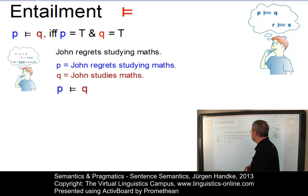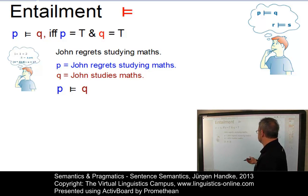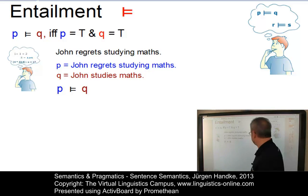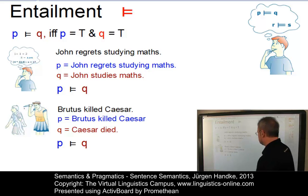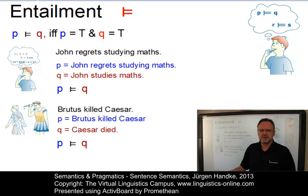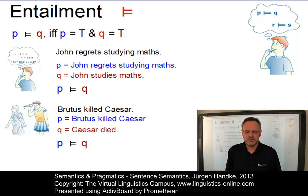Here are two examples. John regrets studying maths. Now, P is 'John regrets studying maths' and Q is, for example, 'John studies maths.' And clearly, P entails Q. Or take this one: Brutus killed Caesar. P is 'Brutus killed Caesar.' Q, let's assume Q is 'Caesar died.' And certainly, P entails Q. So, the fact that Brutus killed Caesar entails that Caesar is dead. But how can we test this? Well, there is an interesting entailment test.